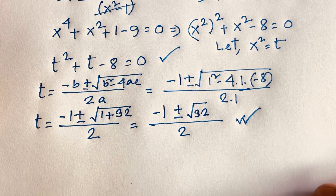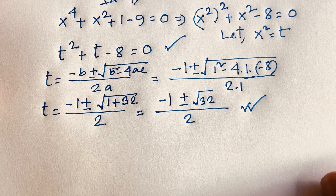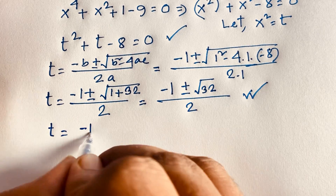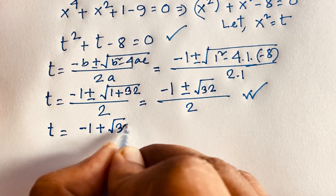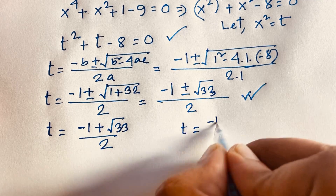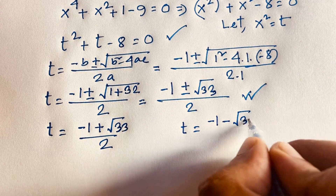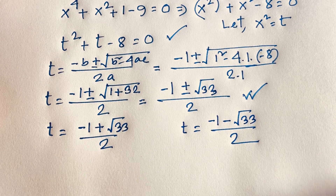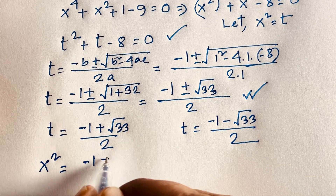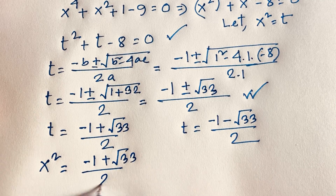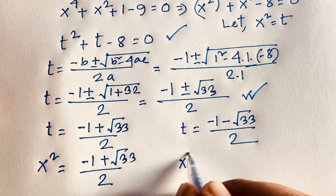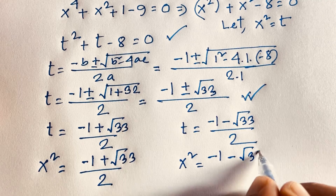So t equals negative 1 plus or minus square root of 33, over 2. This is the value of t. But recall that t equals x squared. So we find t equals (negative 1 plus square root of 33) / 2, and the other value is t equals (negative 1 minus square root of 33) / 2. Substituting back: x squared equals (negative 1 plus square root of 33) / 2, and also x squared equals (negative 1 minus square root of 33) / 2.